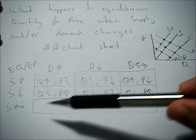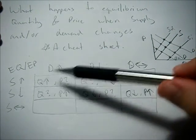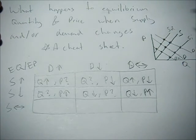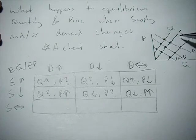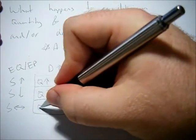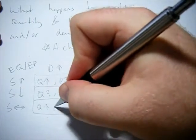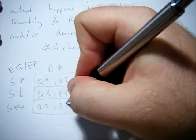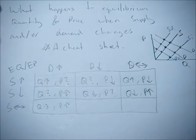Now what if supply stays the same and demand goes up? With the supply curve unchanged and demand shifting right, we see both equilibrium quantity and price increasing.